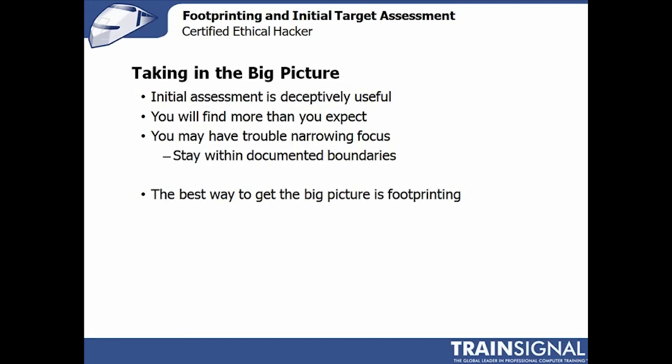At the same time, it's a dual-edged sword in that it can be troublesome to narrow your focus at this stage, because there may be really tempting things you find during footprinting that you might want to attack. For example, email servers may not be part of your documented scope, but during initial footprinting you may actually find unsecured email servers or email servers that are easily spoofed — which is really tempting but ultimately out of scope.